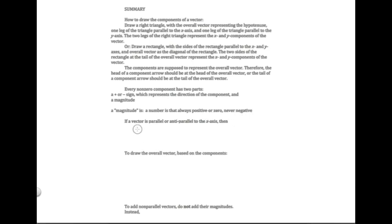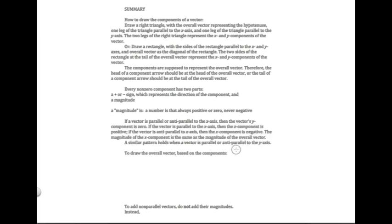If a vector is parallel or anti-parallel to the x-axis, you would not use the right triangle or rectangle method. Instead, the y component is zero. If the vector is parallel to the x-axis, the x component is positive; if it's anti-parallel, the x component is negative, and the magnitude of the x component equals the magnitude of the overall vector. A similar pattern applies when a vector is parallel or anti-parallel to the y-axis.